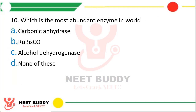Question 10. Which is the most abundant enzyme in the world — option A: Carbonic anhydrase, option B: Rubisco, option C: Alcohol dehydrogenase, or option D: None of these? The correct answer is option B, Rubisco.